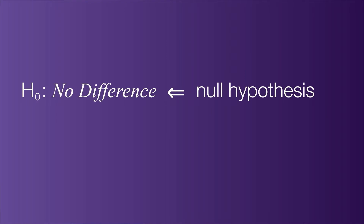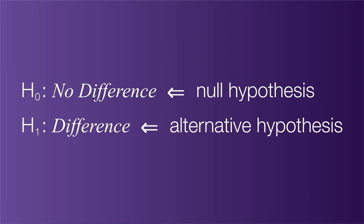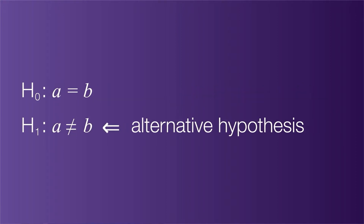Hypothesis tests compare a null hypothesis of no difference to an alternative hypothesis that states a difference exists. Before collecting data, the researcher can choose the direction of the alternative as any difference, A less than B, or A greater than B.